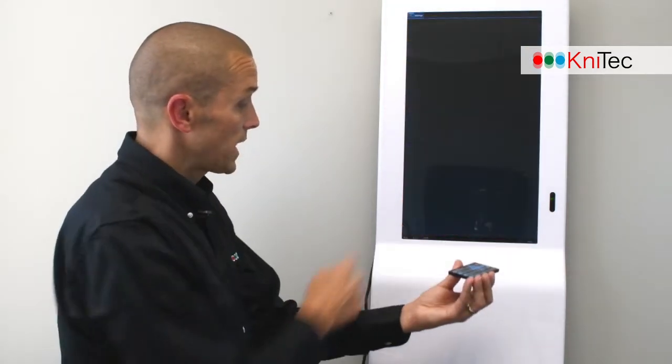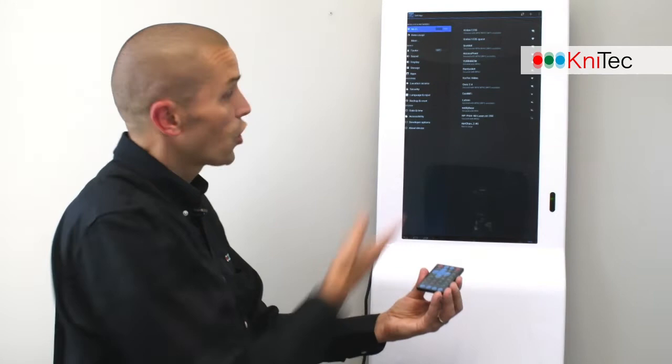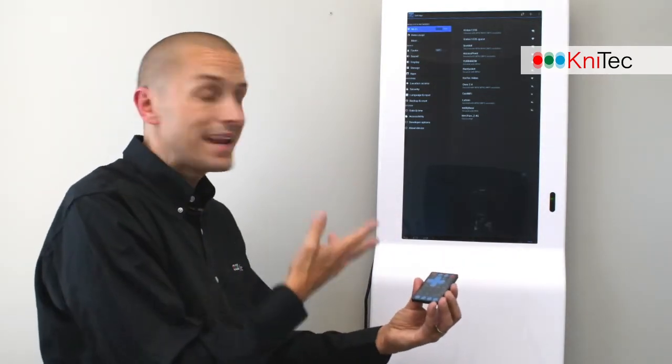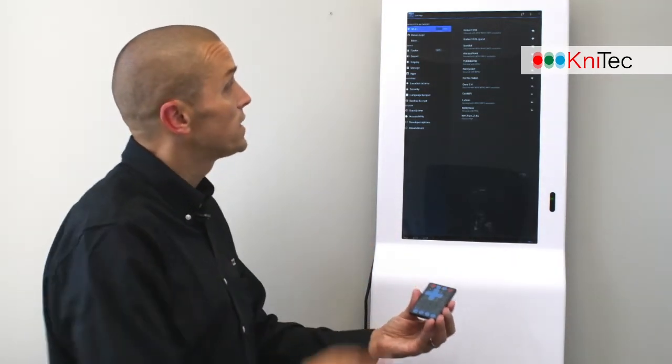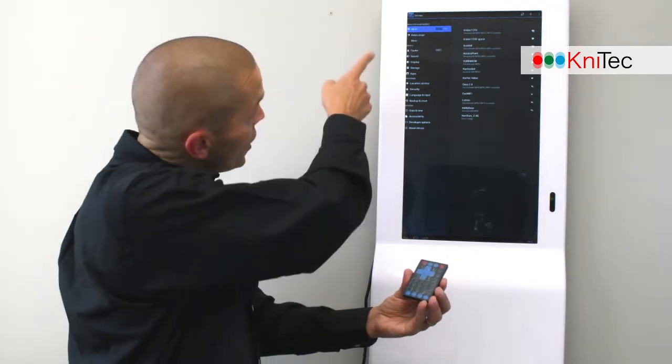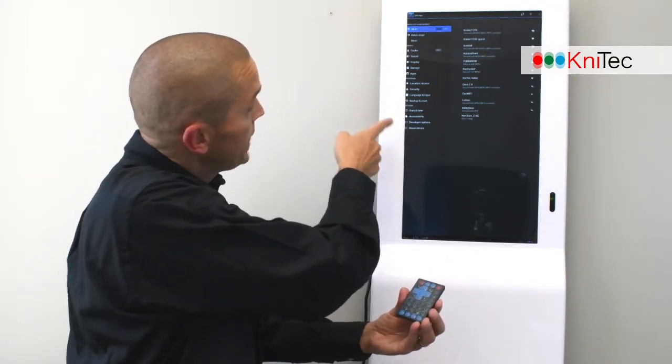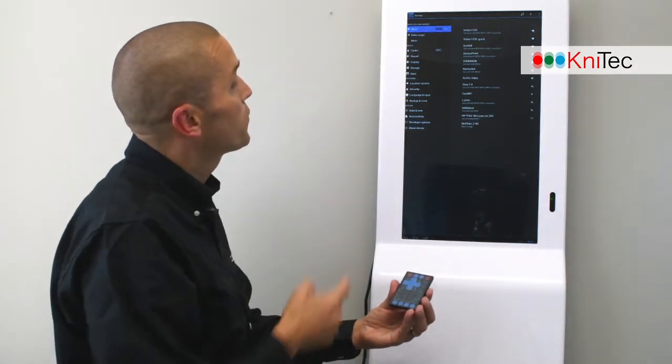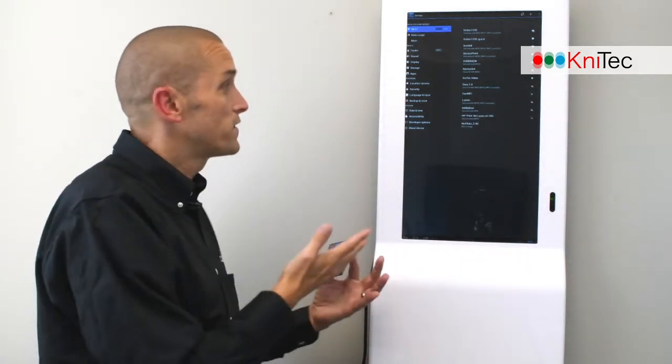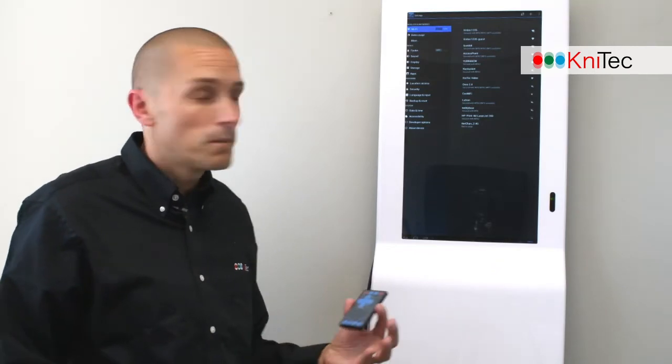Settings is the second one. You can see this is just all of your Android media player settings. All of your system settings from Wi-Fi, data usage, all the way down. All your storage apps, date, time, language, pretty much everything that's on an Android media operating system.